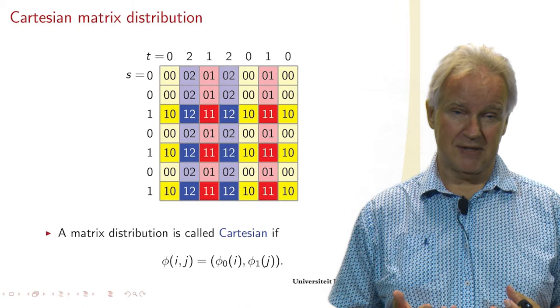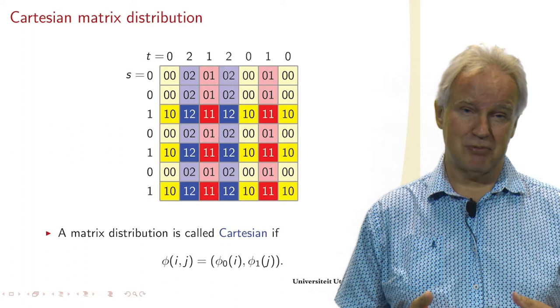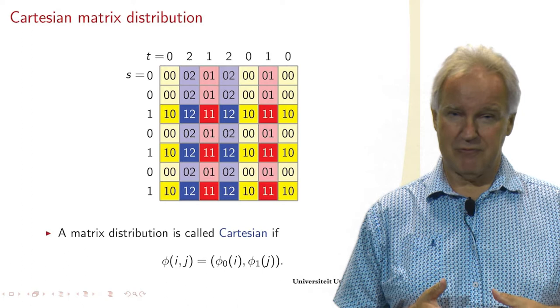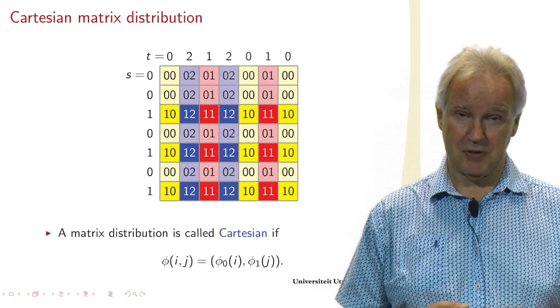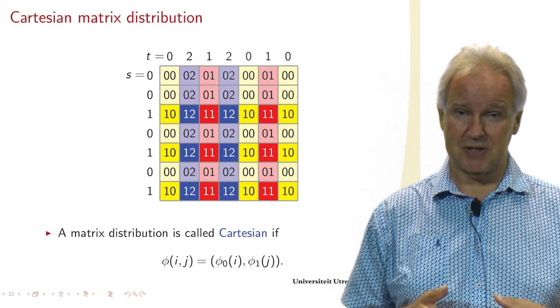Matrix distributions can be arbitrary, but there's a special set of matrix distributions which we call Cartesian. The name comes from Cartesian product of rows and columns. So what does it mean? If phi(IJ) is a function, in the first coordinate only of the row number I, and in the second coordinate only of the column number J, then we have a special distribution.